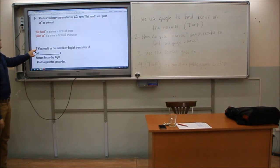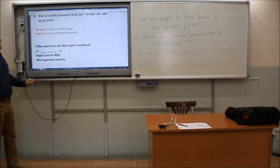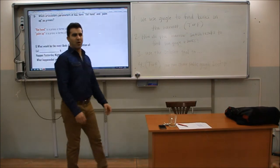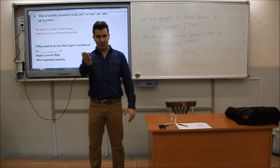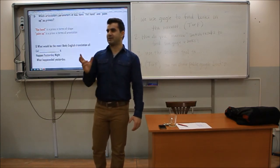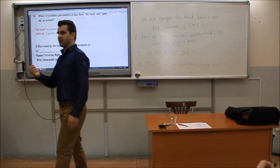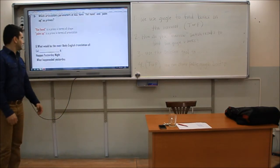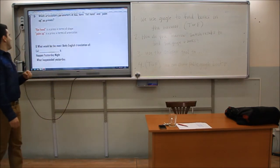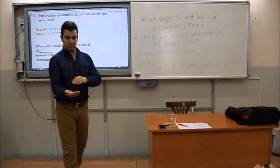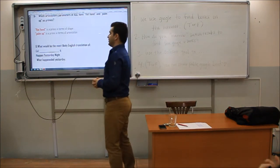They have these as primes. This flat hand is a prime in terms of shape. By prime, we mean the main feature — the root feature, like the root of a word. Future is a prime in terms of shape — flat hand. And palm up — not down, up — is a prime in terms of orientation.